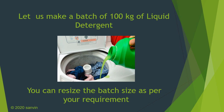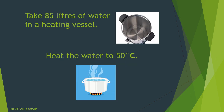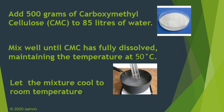You can also use spoons and ladles to help you out. First, take 85 liters of water in a heating vessel or stainless steel vessel and maintain the temperature at 50 degrees centigrade. Add 500 grams of carboxymethyl cellulose, also called CMC, to the 85 liters of water. Mix well until the CMC has fully dissolved, maintaining the temperature at 50 degrees centigrade to help dissolve the CMC in water.